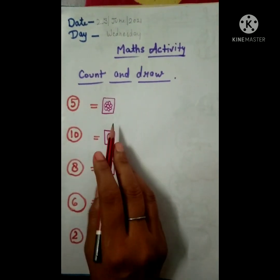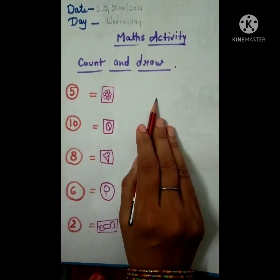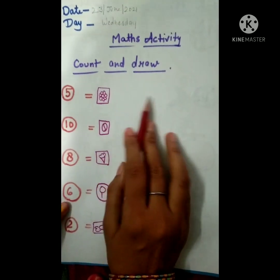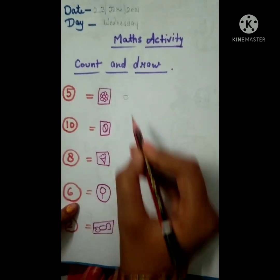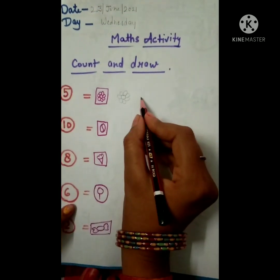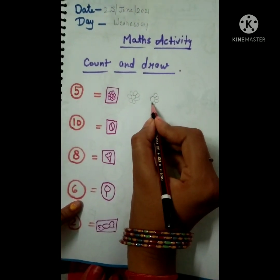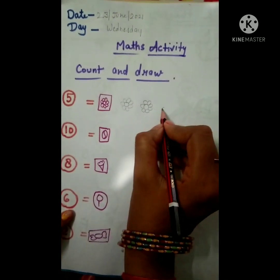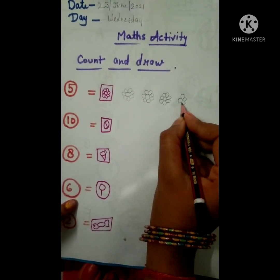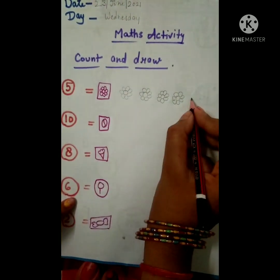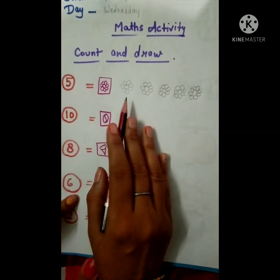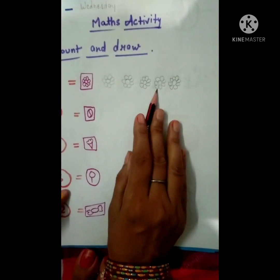Here are some numbers and some pictures. You can see the numbers and the pictures here. Here is a flower, and what is it called? Five — it means we have to draw five flowers. 1, 2, 3, 4, 5.